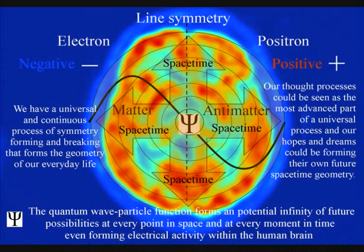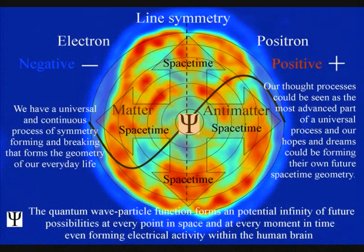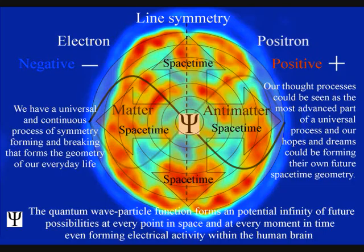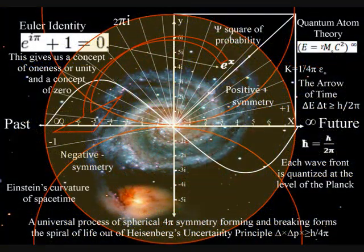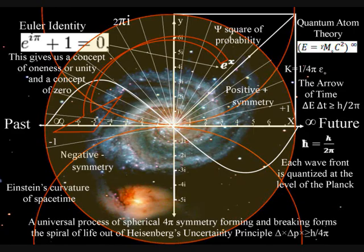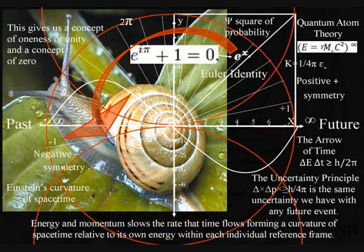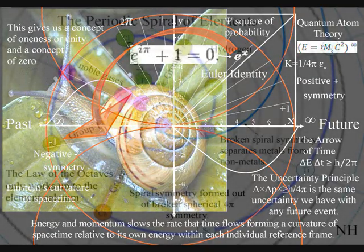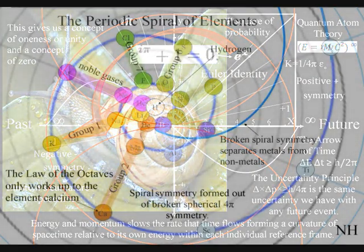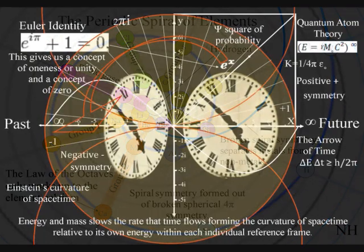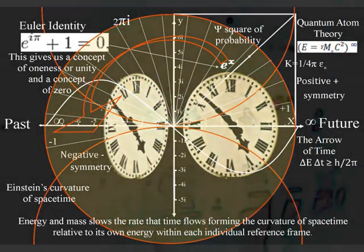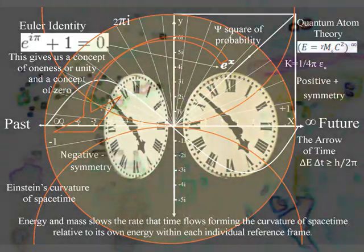The most advanced part of this universal process is in the form of electrical activity in the brain being able to comprehend and measure this process as the flow of time with a past and uncertain future. This process is totally universal and interactive, from the largest object to the smallest creature, right down to the smallest element of the periodic table, will slow the rate that time flows, forming a curvature of space-time relative to its own energy or mass.